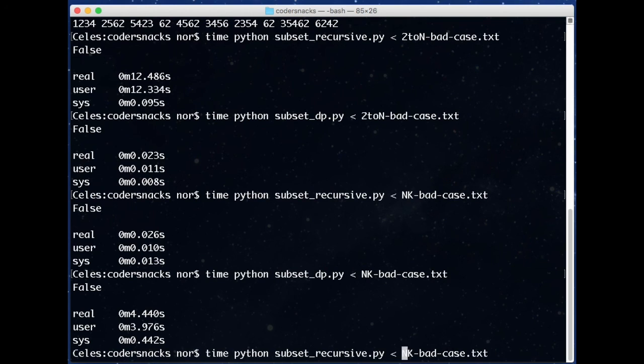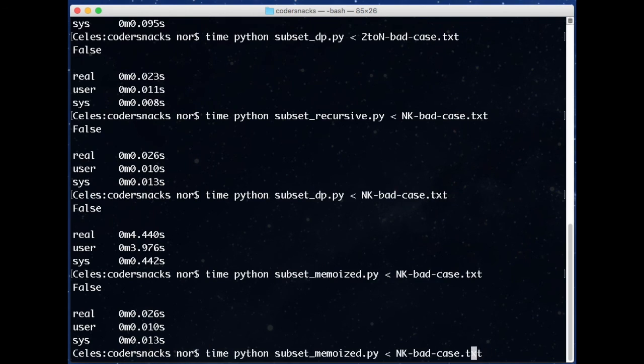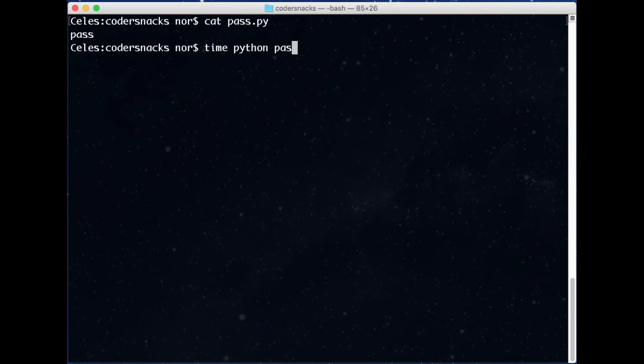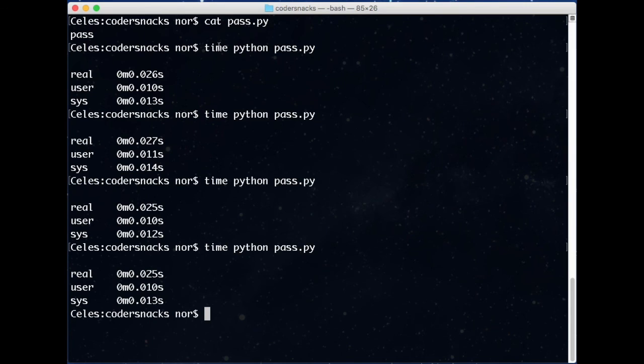But when we run a memoized version on both of these, it returns quickly in both cases. We expect the memoized version to take about as long as the better of the two solutions, plus some overhead for the dictionary. Also keep in mind, Python itself takes some time to load, so these small times are even smaller in terms of how much processing is being done. This isn't a very scientific test, but it roughly illustrates the advantages of all three solutions.